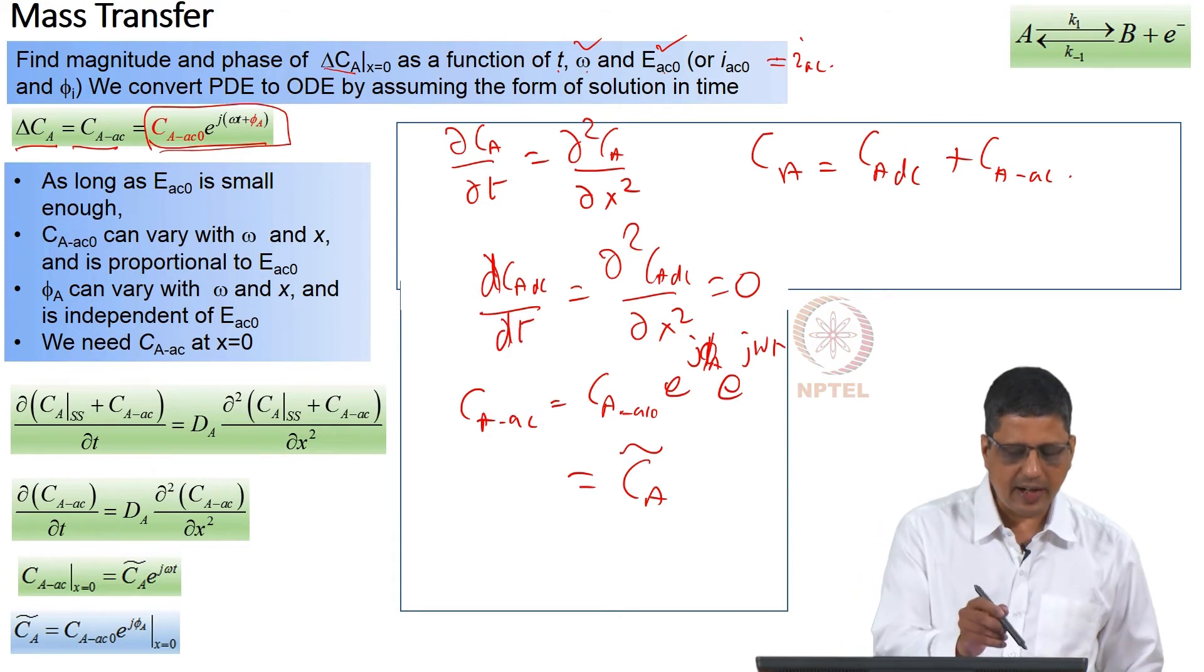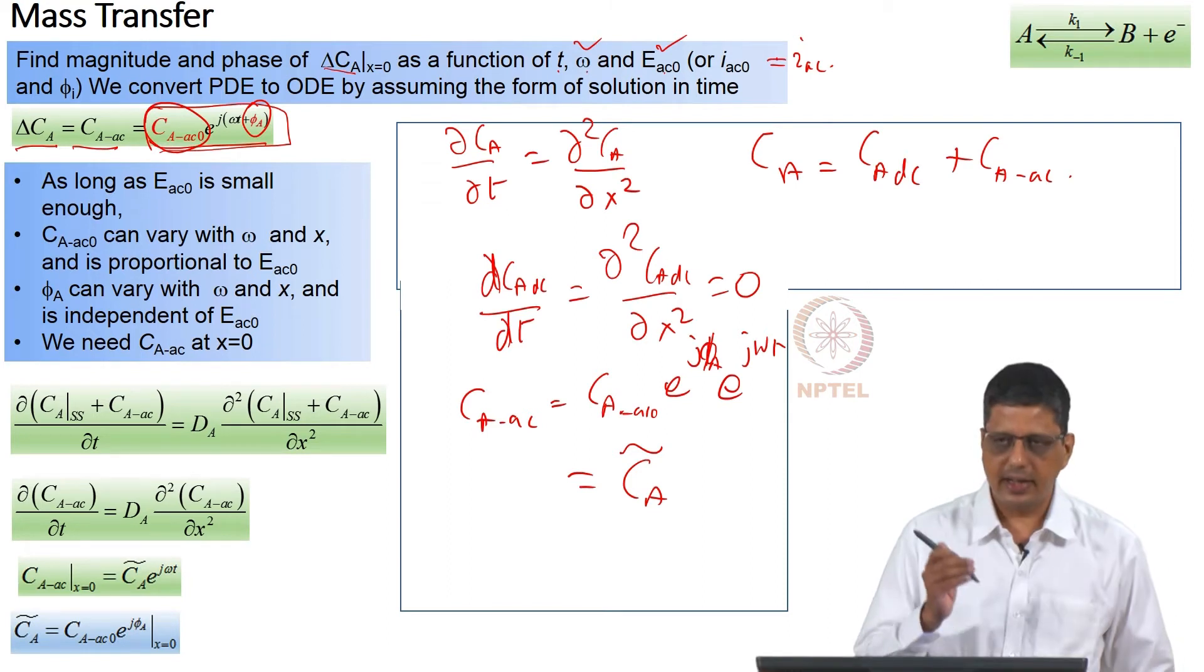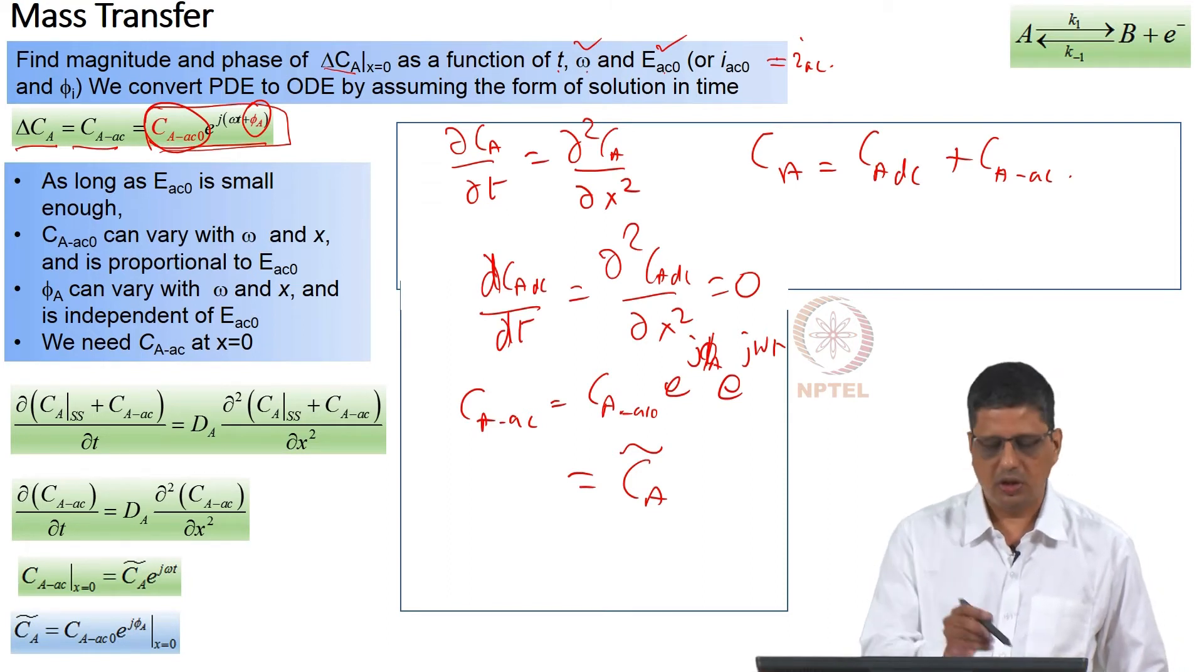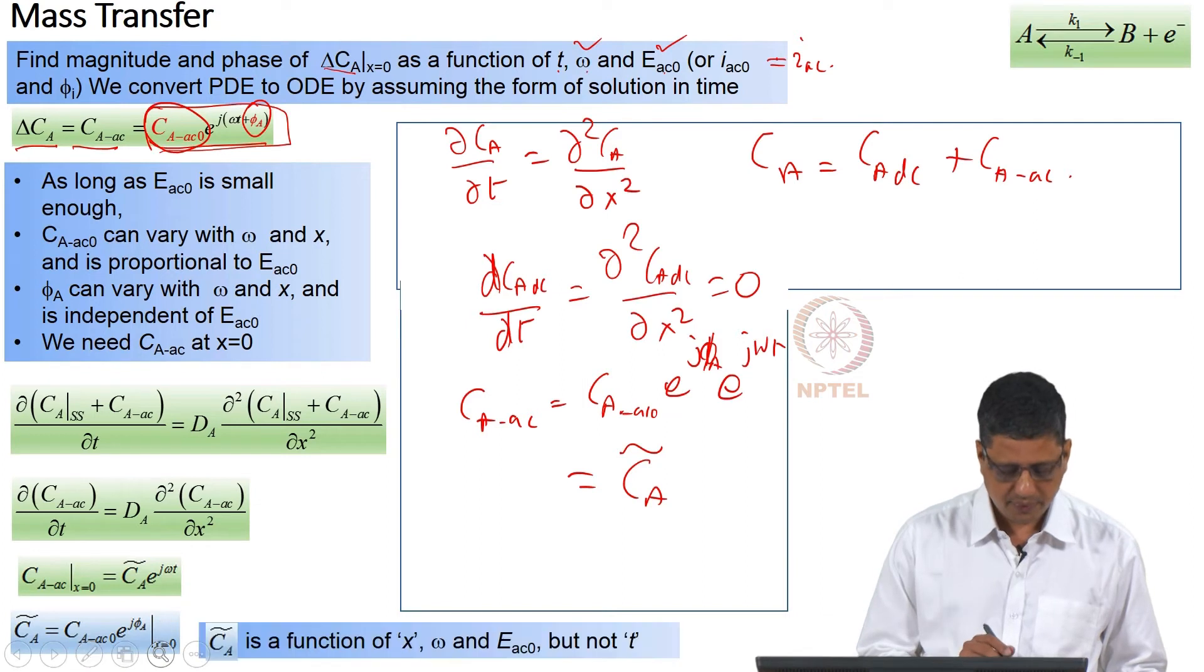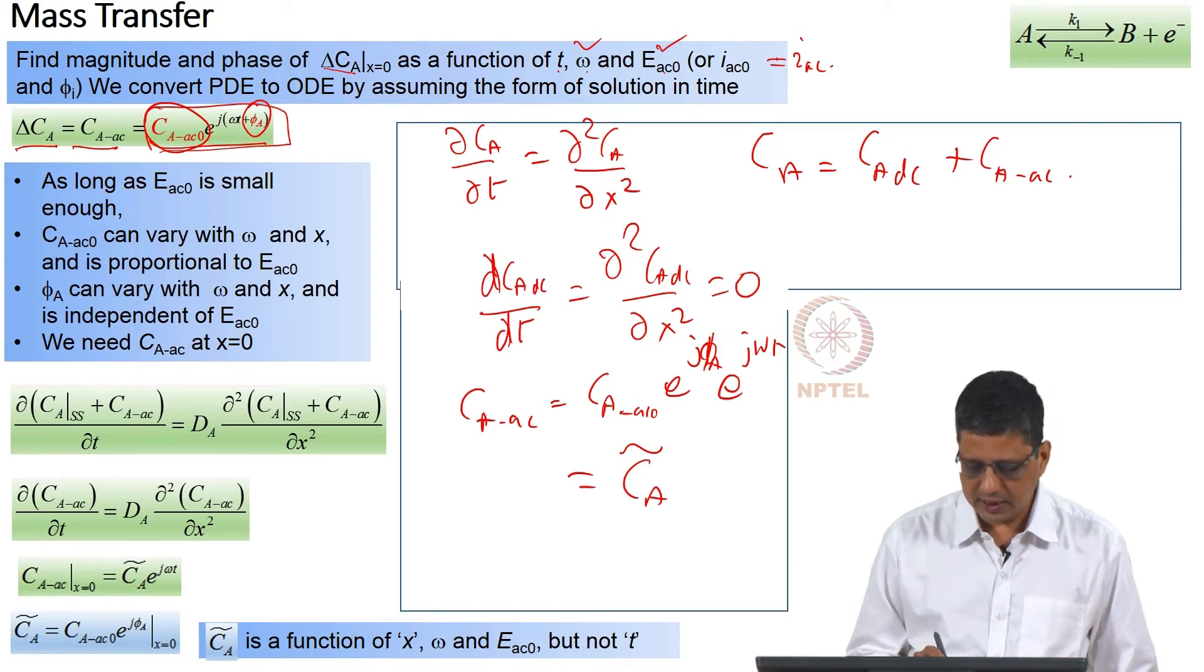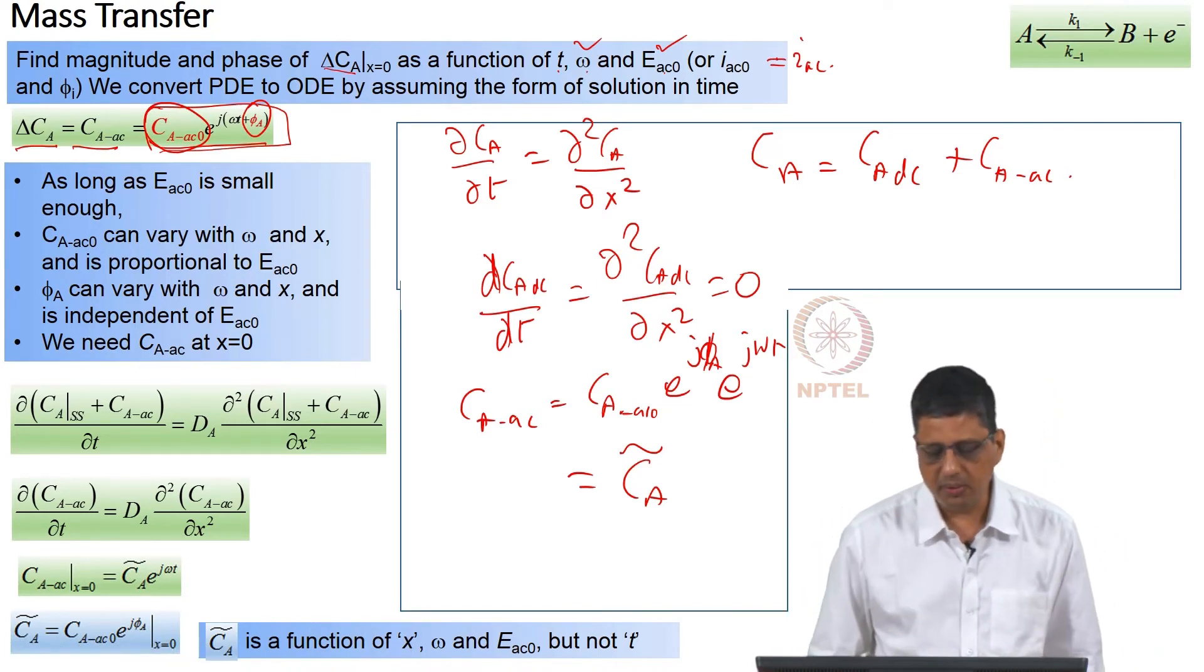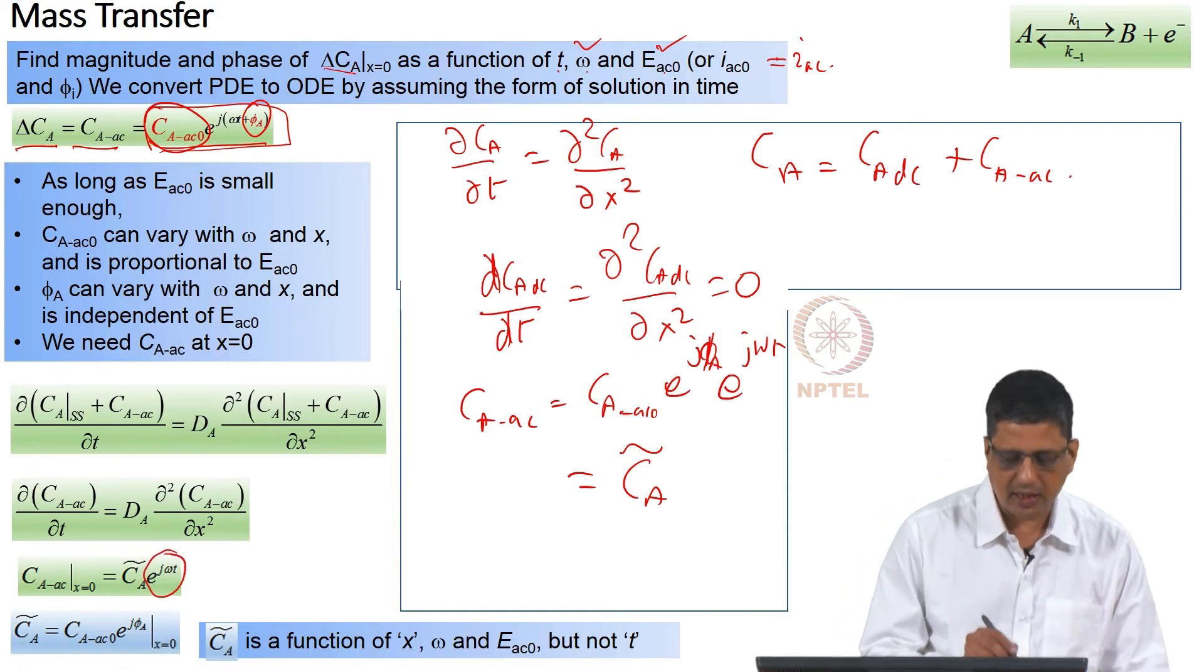So, our aim is to find whatever is shown here in the red. For any omega, what are the values? For any E_AC_0 as long as it is small enough, what are the values? So we use Fick's equation. Now C_A tilde is a function of location. Although we want to look at it only at x=0. It is a function of omega and E_AC_0 but it is not a function of t. The function of t is isolated and brought here.